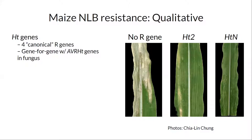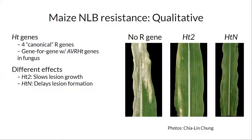These are from greenhouse experiments by a former grad student of Rebecca's, Chowlin Chung. Here's it without an R gene, here's it with one of two different R genes. One interesting thing is that even with only these four genes, we see different effects. HT2 doesn't delay the formation of lesions — they still show up around 10 days — but it does slow their growth and you get chlorotic yellowing. HTN does not slow the rate of growth of the lesions, but it does greatly delay their formation. Resistance is not all the same — they're acting at different points.